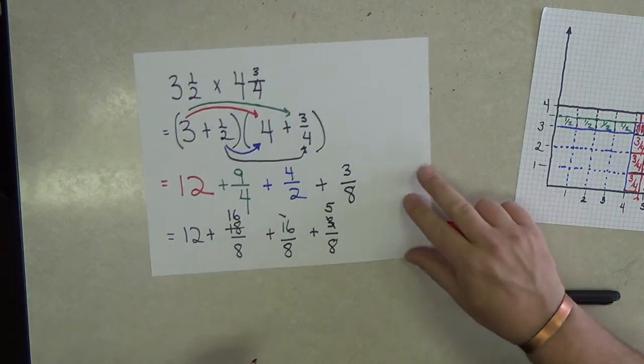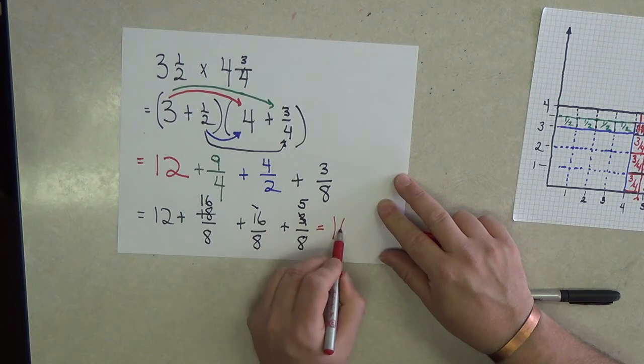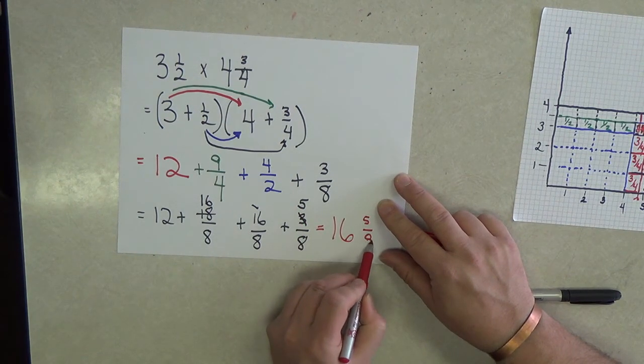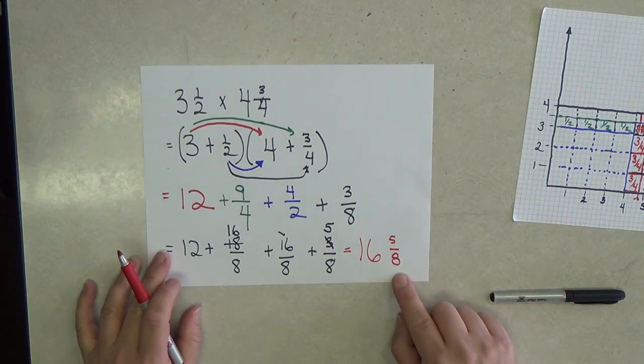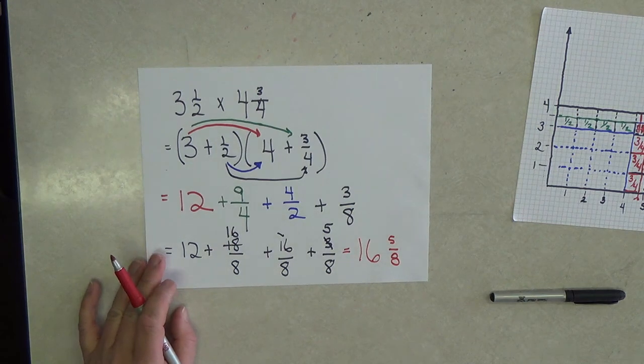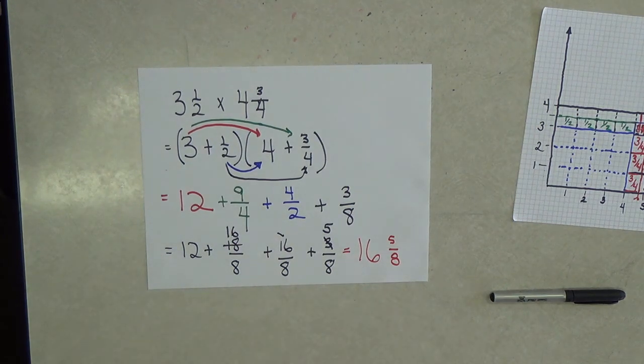So let me write that down. I have 16 wholes and I have 5 eighths left over. Or actually you could think of it as 5 eighths of the 17th piece or the 17th whole. And this is how I sometimes add.